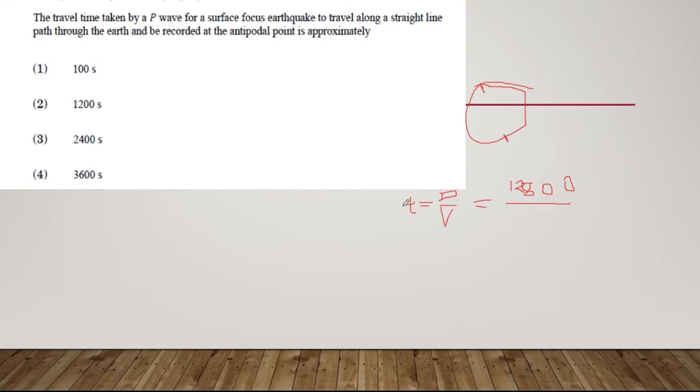The P-wave speed in crust is 6 kilometers per second. In mantle it is 13.5 kilometers per second, and in core it is 11 kilometers per second. When you take the average velocity in the entire earth, it will be 10. So 12,800 divided by 10 is 1,280, which is approximately close to 1,200. The right answer will be 2.